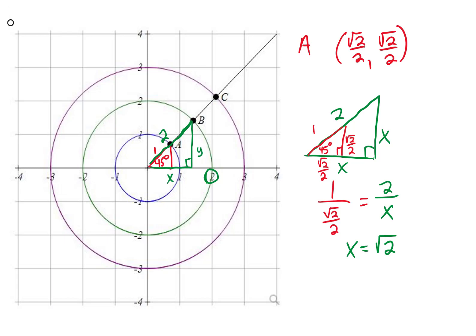And looking on my triangle, this is X and this is Y, but they are both the same length, so my coordinates for B would be square root 2 and square root 2.